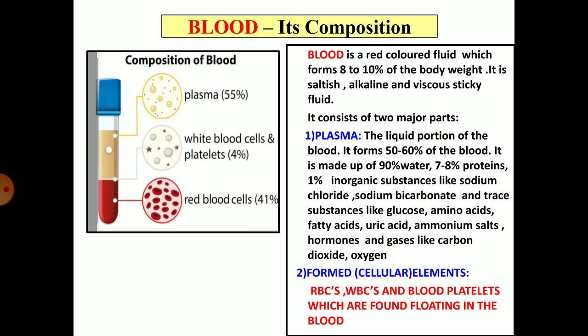Blood consists basically of two main parts. The liquid portion, called plasma, forms 50 to 60% of the blood. It is made up of 90% water, 7 to 8% proteins, 1% organic substances like sodium chloride and sodium bicarbonate, and traces of certain other material. It also contains glucose, amino acids, fatty acids, uric acid, ammonium salts, hormones, and gases like carbon dioxide and oxygen.